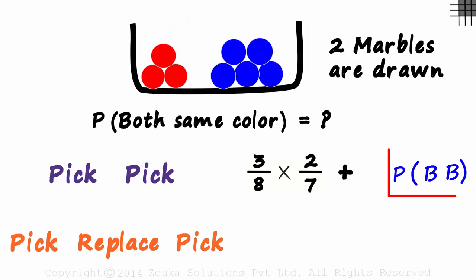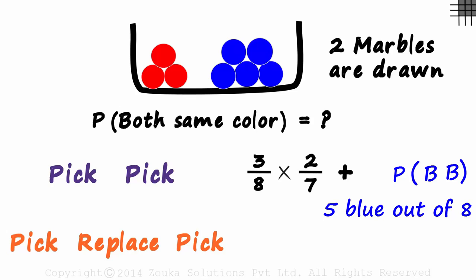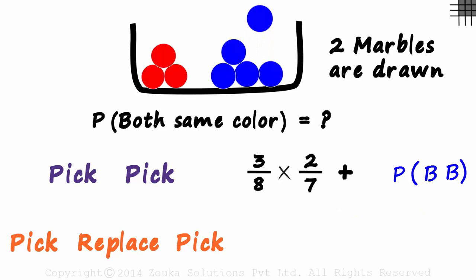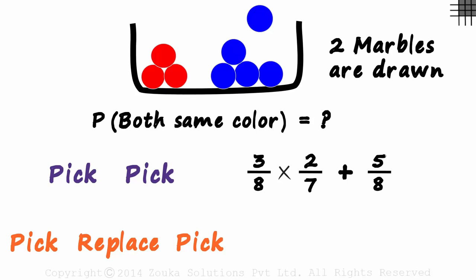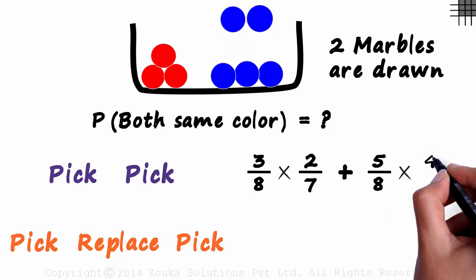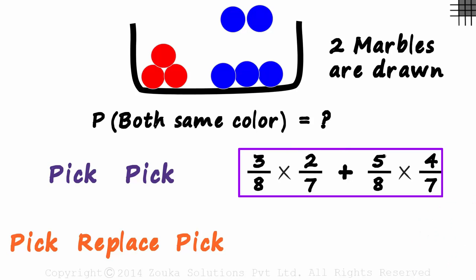For the probability of both marbles being blue: there are five blue marbles out of eight total, so the probability of the first marble being blue is 5 over 8. Now there are four blue marbles out of seven total, so the probability of the second marble also being blue is 4 over 7. This gives us the answer for the first case.